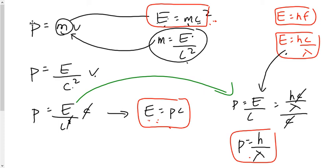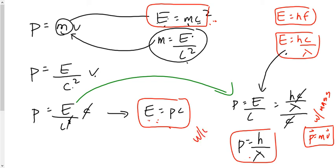Don't mix these up with the equation from the first day of Physics 30, p equals m times v. That equation is still valid for something with mass, like a proton, an electron, or a baseball — not a photon. The equations p equals E over c and p equals h over lambda are valid for particles without mass — i.e., a photon — not a proton, not an electron, not a baseball.